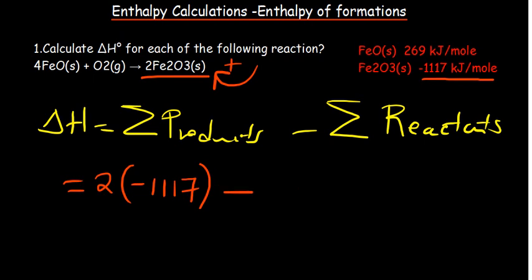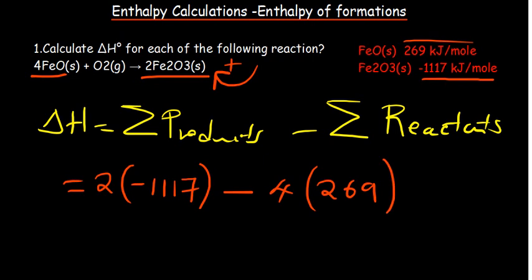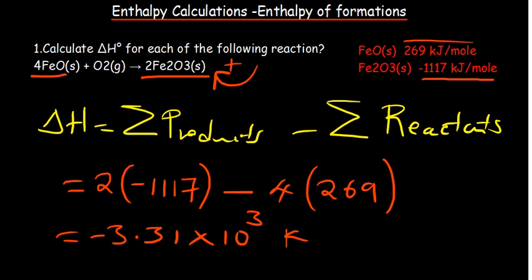Now we subtract for our reactants. We only have a single reactant that has an enthalpy of formation — four moles of it — so we multiply four by the enthalpy of formation, which is 269 kJ/mol. If we had another reactant with an enthalpy of formation, we would add it before subtracting from the products. So: two multiplied by negative 1117, minus four multiplied by 269. The result is negative 3.31 × 10³ kilojoules per mole. That is our enthalpy of the reaction.